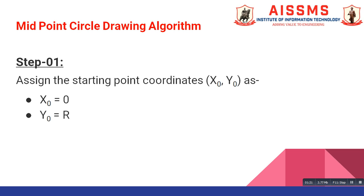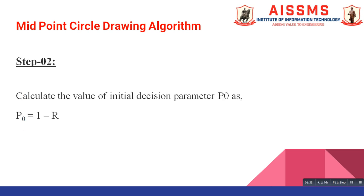Now let us see the steps to solve the midpoint circle drawing problem. Our first step is to assign the starting point coordinates as x0 equal to 0 and y0 equal to r, where r is the radius of the circle. Our next step is to calculate the value of the initial decision parameter p0 as p0 equal to 1 minus r. p0 decides where to plot the next point of the circle.